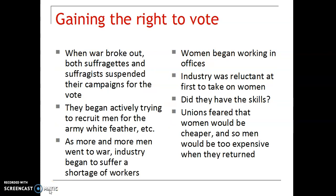A number of quite well-publicised activities were taken up by the Suffragettes: chaining themselves to railings, attacking paintings in the National Gallery, bricking Number 10 Downing Street. These all gave them publicity, but also alienated quite a number of people. The most famous event was the death of Emily Davison on Derby Day in June 1913, when she tried to pin a rosette onto the king's horse and was knocked over, trampled on, and died soon afterwards.